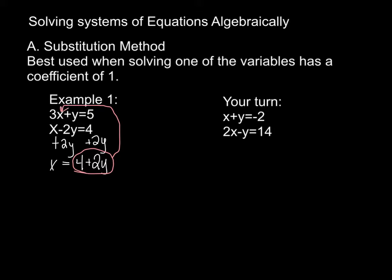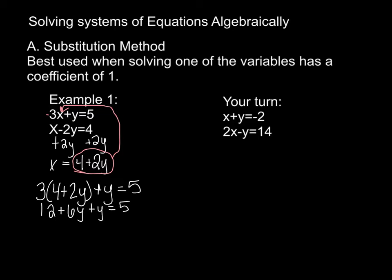I'm going to substitute x equals 4 plus 2y in for the x in the first equation. So I get 3 times (4 plus 2y) plus y equals 5. I distribute the 3: 12 plus 6y plus y equals 5. Combining like terms: 12 plus 7y equals 5. Subtracting 12 from both sides gives 7y equals negative 7. Dividing by 7, y is equal to negative 1.